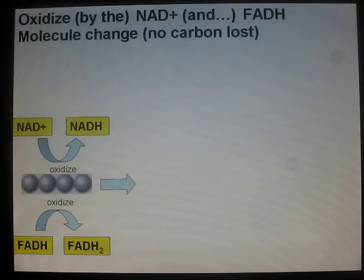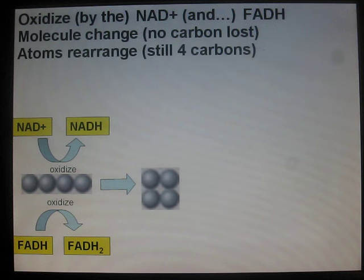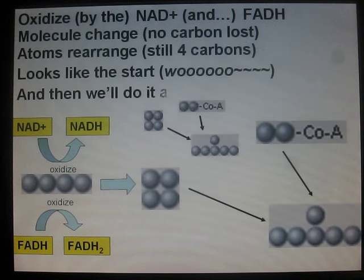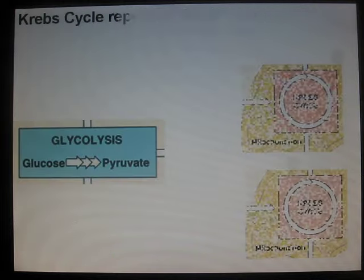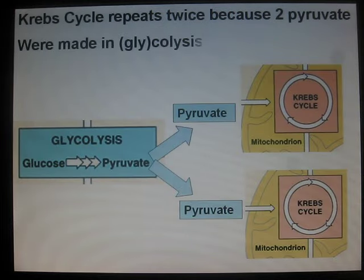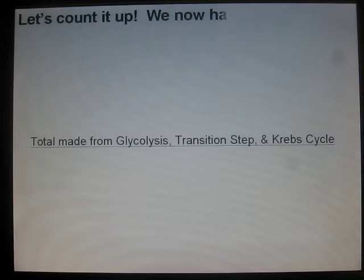Molecule change — no carbon lost, atoms rearrange. Now four carbons — looks like the start. And then we'll do it again! Krebs cycle repeats twice because two pyruvates were made. Let's count it up — we now have 4 ATP, 6 CO₂, and electron carriers.